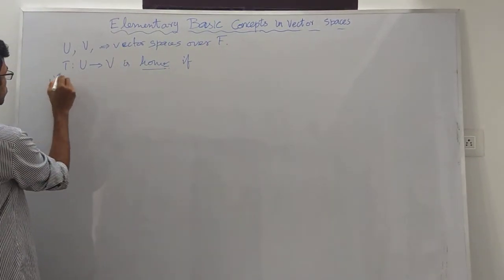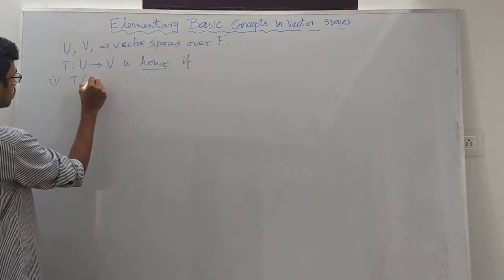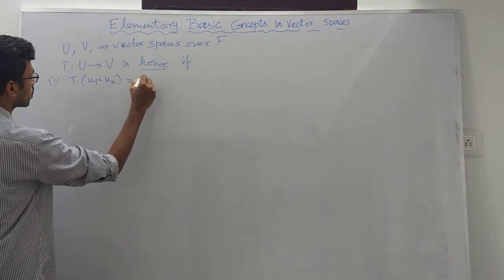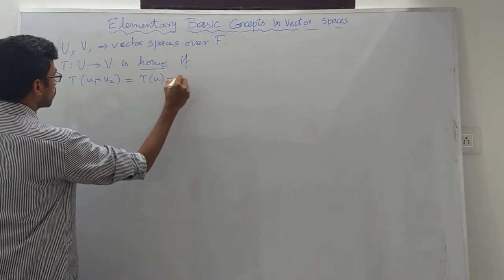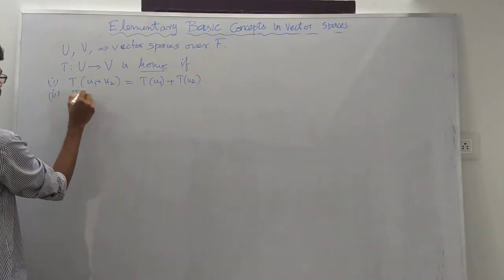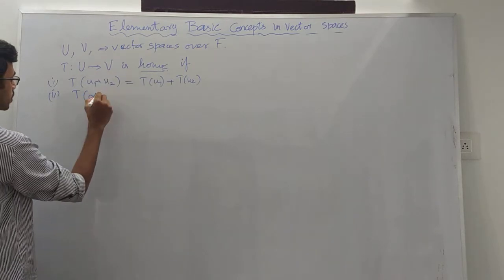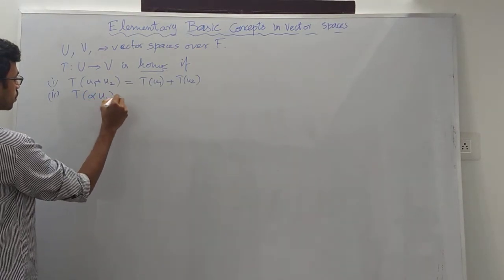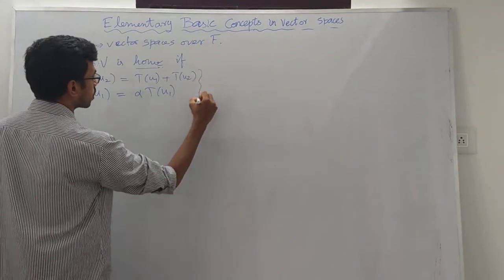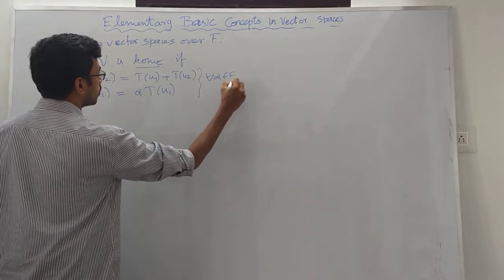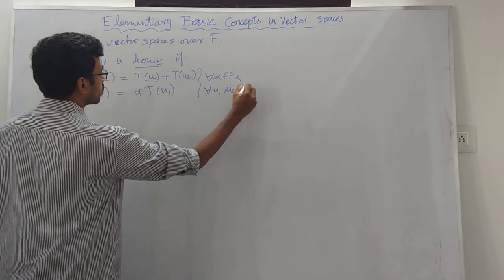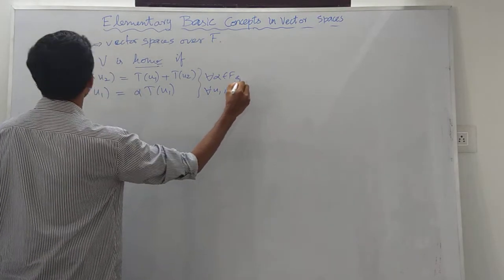That is, the first operation: T of U1 plus U2 equals T of U1 plus T of U2. The second operation: scalar multiplication is preserved, so T of alpha times U1 equals alpha times T of U1. This is true for every alpha in F and for every U1, U2 in U, the domain.